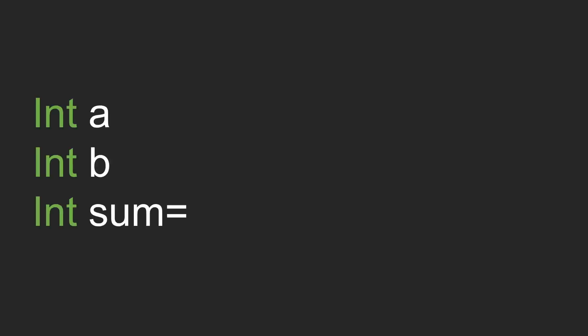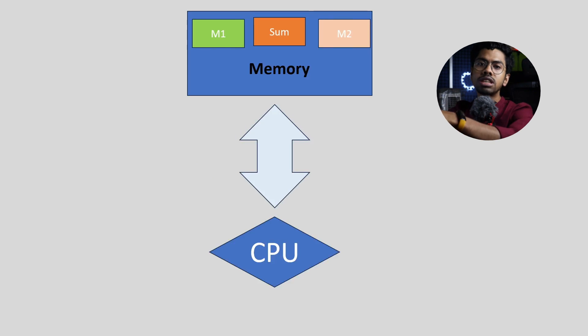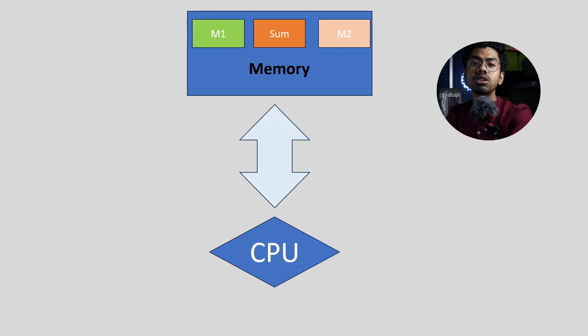Let me give a simple example to distinguish software from hardware. To add two numbers, we write a code — we define variables A and B, take input from the user, and write 'sum = A + B' in C++ or Python. That is the software part. When you run that code on a general-purpose computer, it takes two memory locations, stores A and B, uses a built-in adder, performs the addition, and returns the result.